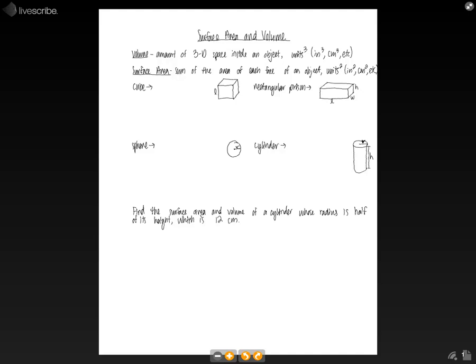And the surface area is the sum of the area of each face of the object. And so the surface area would be the surface area of the entire cup around the outside of that volume of water. And the units are squared for surface area, so we have like inches squared, centimeters squared, things like that.